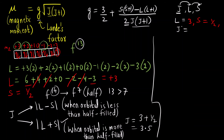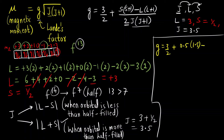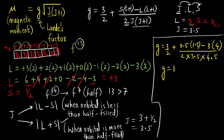Now we substitute into the g formula: g = 3/2 + [S(S+1) - L(L+1)] / [2J(J+1)] = 3/2 + [(0.5×1.5) - (3×4)] / [2 × 3.5 × 4.5]. Solving this, the g value comes out to be 1.1428, which we round to 1.143.